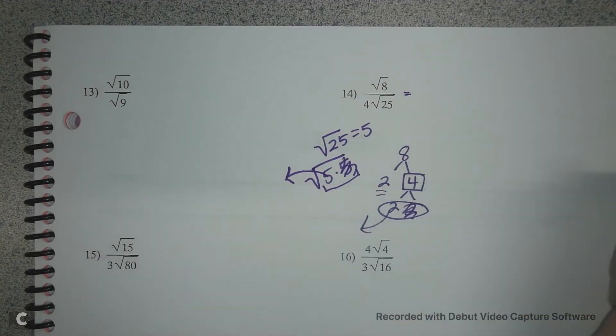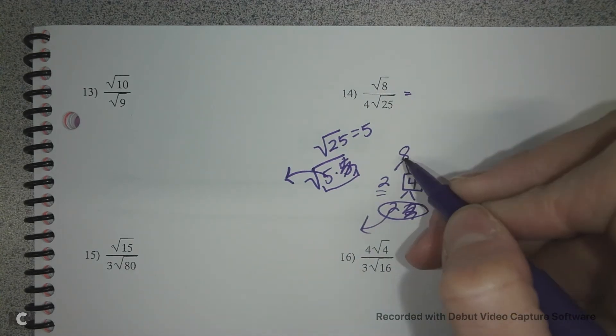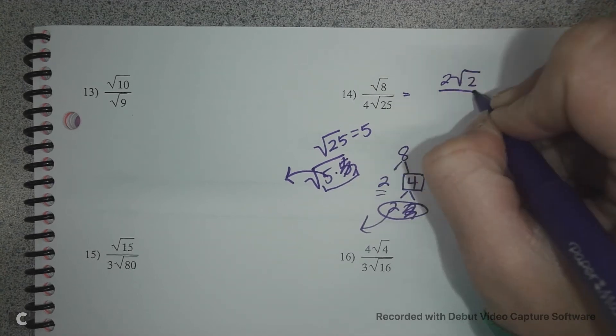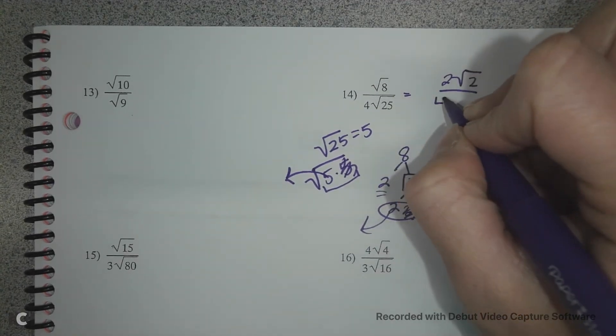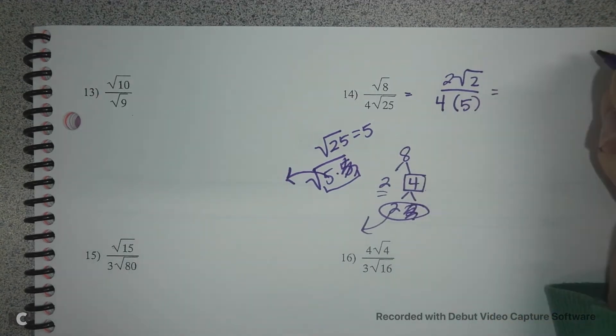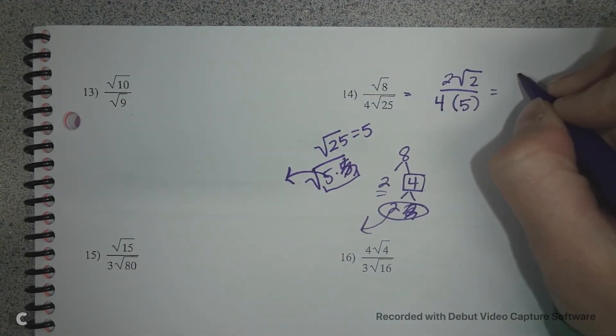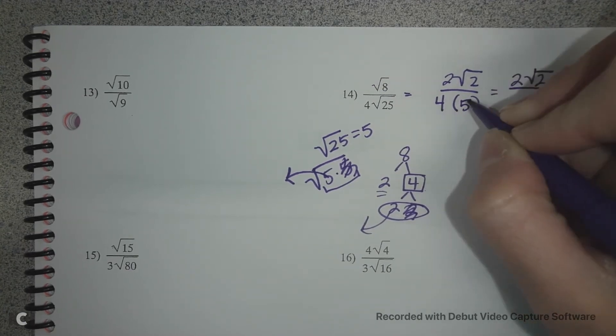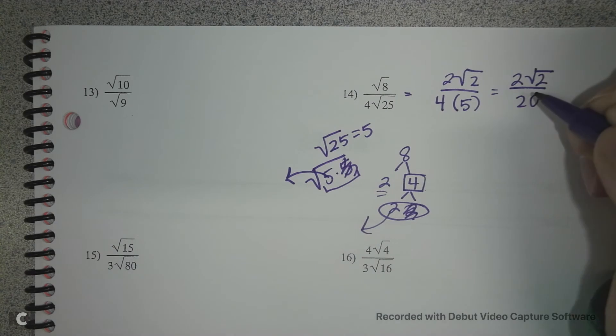And I'm stuck with one number underneath my radical, so 8 really is 2 root 2. And then underneath I have my 4 on my outside, and then the square root of 25 is 5. So now we reduce. Okay, so we have 2 root 2 over 4 times 5 is 20.